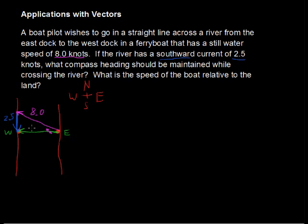So we have a triangle here with these vectors, and adding the two vectors, the 8.0 and the 2.5, in the directions that I've given gives a resultant vector of directly from east to west.